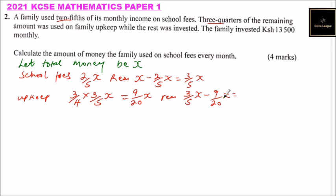You can use your calculator so that you save time. You will be able to get, you subtract that, you get 3 over 20 X because you get the LCM and then you subtract. So this is what was invested.